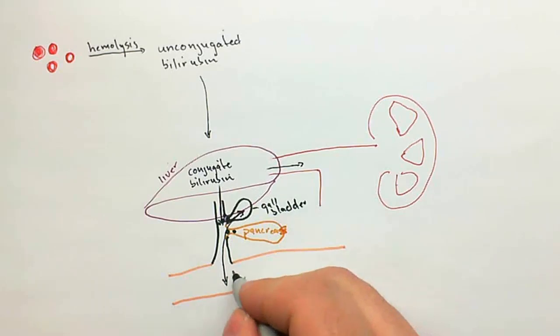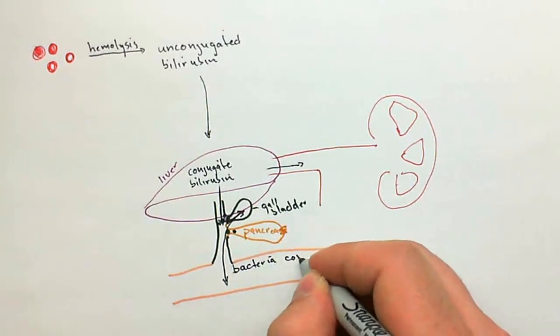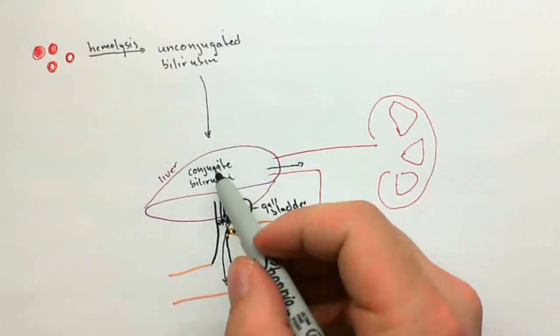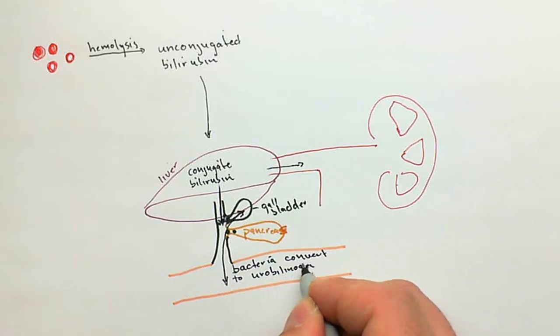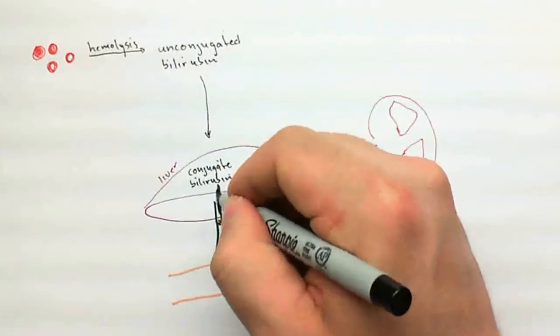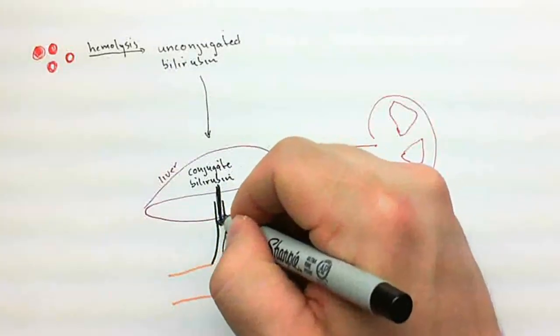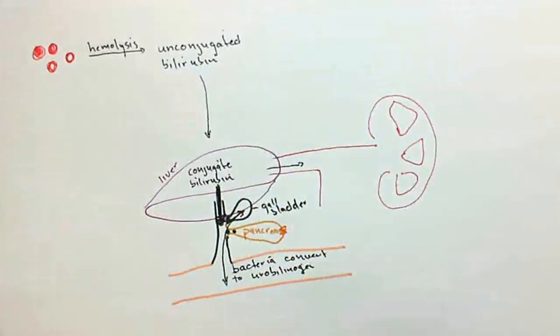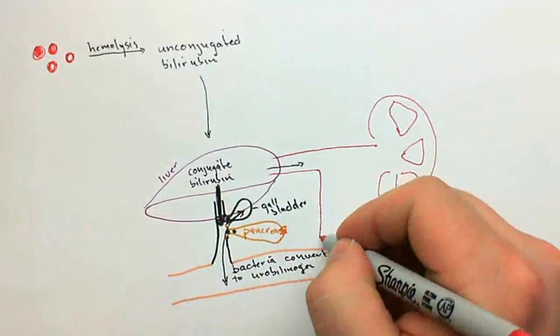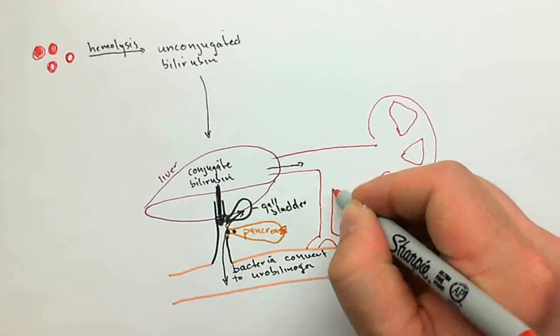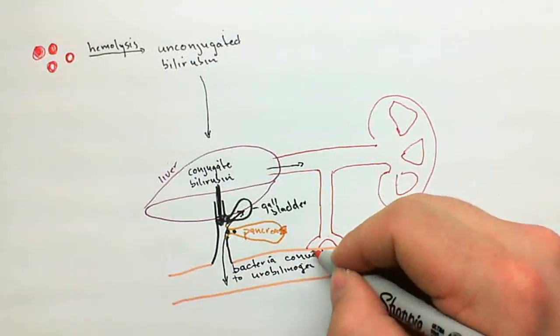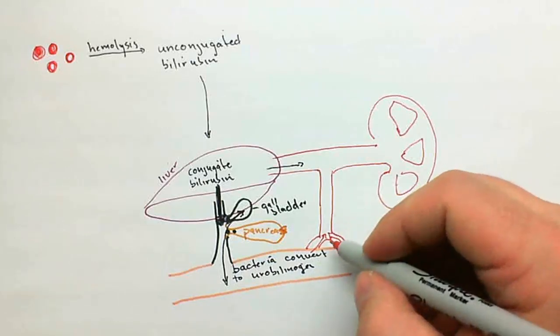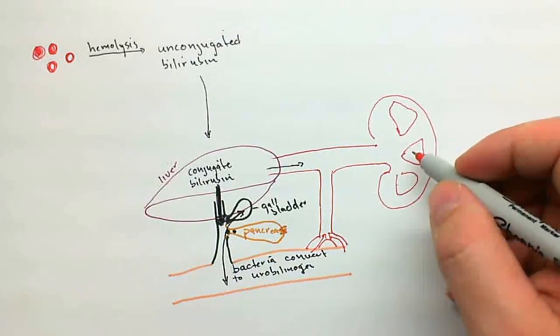Now there's bacteria in the gut, convert this conjugated bilirubin to urobilinogen. This urobilinogen can also re-enter the blood as it's reabsorbed from the small intestine, and that could also end up in the kidneys.